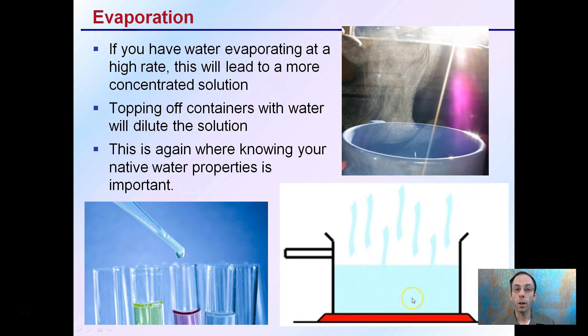As a result, with less volume of water, the concentration level will go up. So good growers should be topping off containers with water to dilute that solution so that you're maintaining the proper PPM for delivering to the plants.